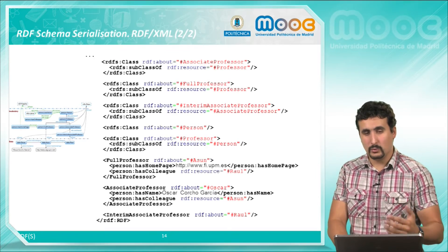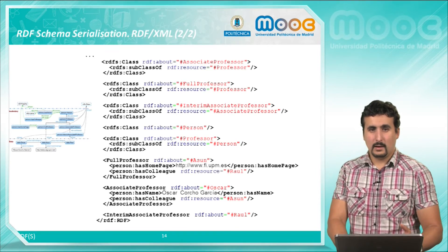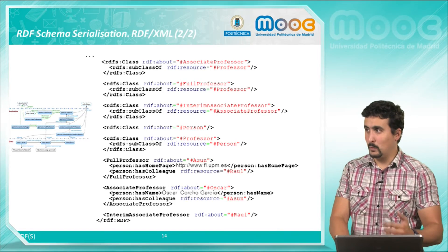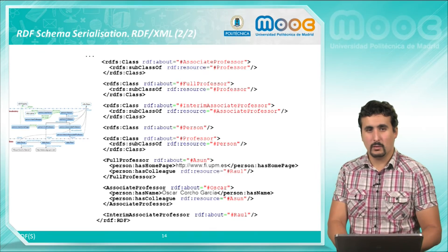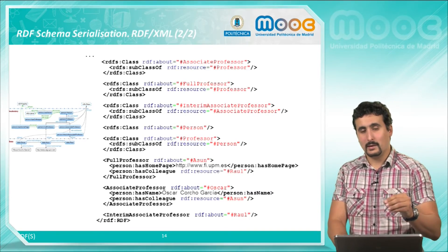We see here how they state the subclass property as we introduced before, implementing this way the class hierarchy or taxonomy.